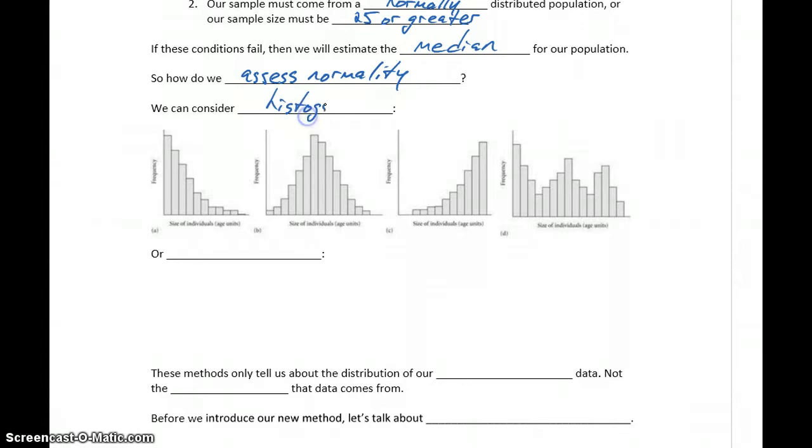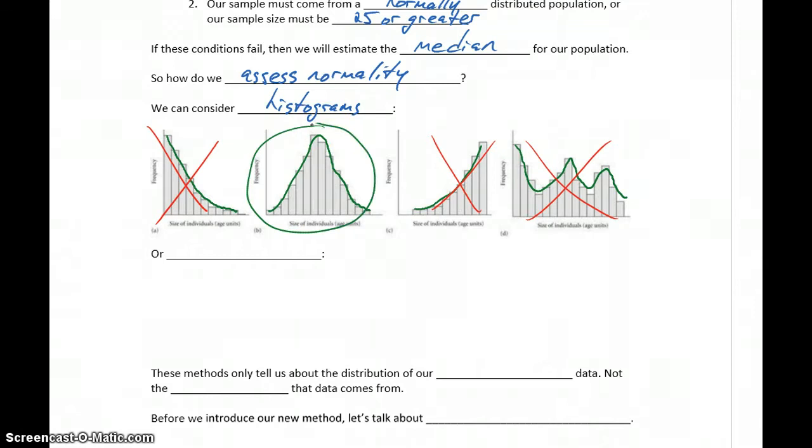So one method is to consider histograms. We can take our sample data and look at the tops of each of the bars in the histogram and see what shape those trace out. We know that a normal distribution is a symmetric unimodal distribution. So this first distribution obviously isn't symmetric. We could throw that out. The third distribution is also not symmetric. The fourth one is somewhat symmetric, but not unimodal. So our only example graph here that would fit a normal distribution would be the second one.